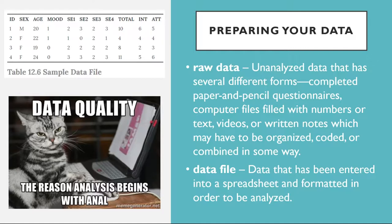Now you're ready to enter your data in a spreadsheet program, or, if it's already in a computer file, to format it for analysis. You can use a general spreadsheet program like Microsoft Excel, or a statistical analysis program like SPSS or PSPP, to create your data file. Data files created in one program can usually be converted to work with other programs. The most common format is for each row to represent a participant and for each column to represent a variable, with a variable name at the top of each column. A sample data file is shown in Table 12.6.